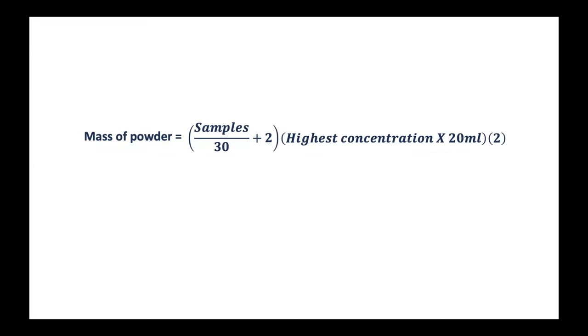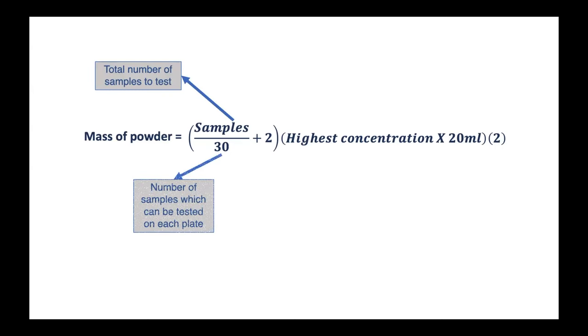This is the equation that I use to calculate the mass of powder that's required. First, we consider the number of samples that we're testing, divide that by the number of samples which can be tested on each plate. This will give us essentially the number of batches of plates we need in order to test all of the samples in our isolate collection. When preparing our media, we always add in a margin of error.